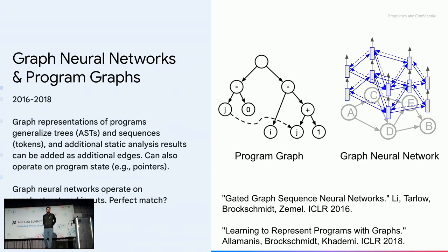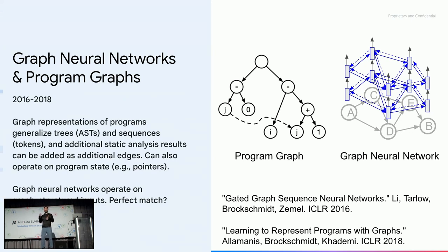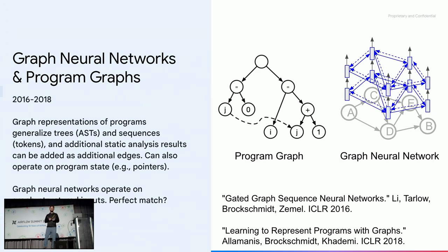Moving beyond AST representations, people realized a tree structure is nice but there's more to a program — data flow, static analysis relationships, the token sequence. At the same time, neural networks for graph-structured data were being developed. The idea was to represent a program as a graph: take the AST, add whatever static analyses are important, add the token sequence, and pass it to a graph neural network, getting a representation that incorporates formal relationships in the program. People were excited because it seemed to combine the best of static analysis and neural network representations, and there were some good results.